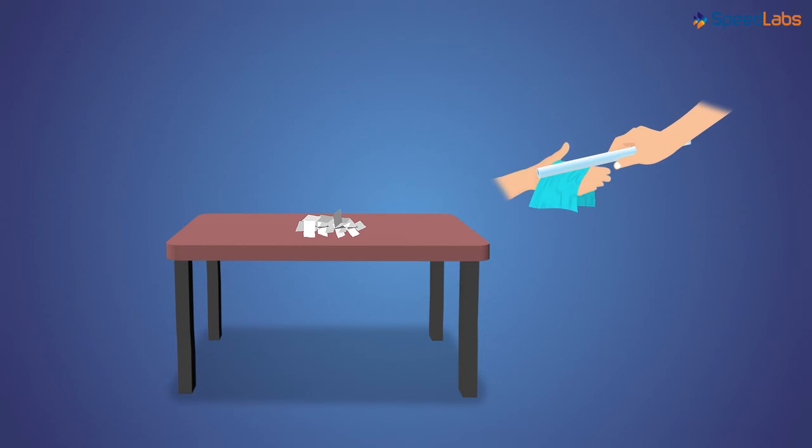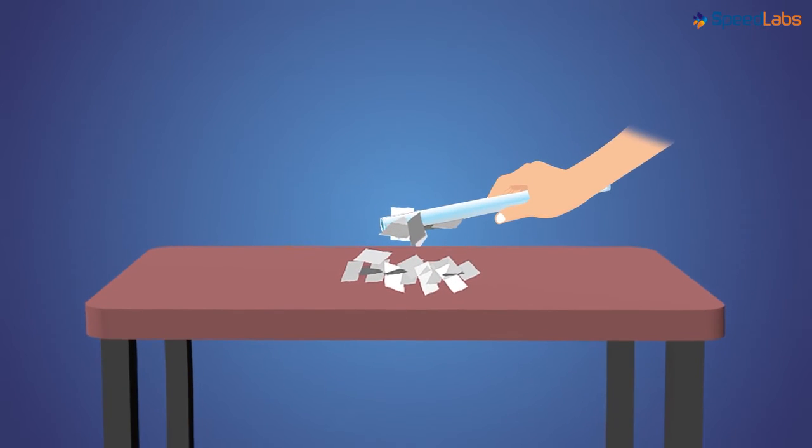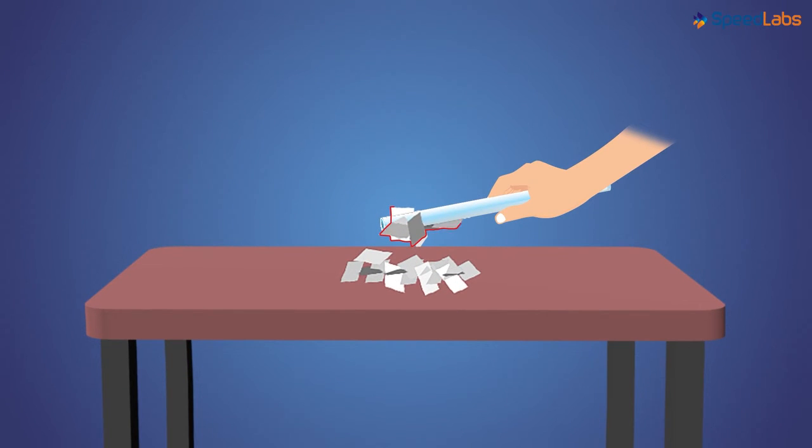Now we rub this glass rod with a silk cloth, and again bring it near the pieces of paper. This time something happens. The pieces of paper stick to the surface of the rod. They are attracted to the rod.